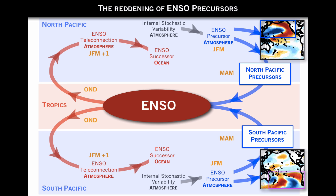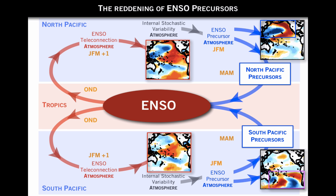Now the interesting part is we can take these precursor indices, both north and south, and make a correlation map with the SST of the following winter. What's interesting is that you start from patterns that are not symmetric with respect to the equator, but then through this loop process ENSO symmetrizes them, and you get an ENSO-like pattern for both precursors as they progress through the loop. So for example, this precursor in the south — during this loop, the variance in the southern hemisphere gets projected back also into the northern hemisphere. You have transfers of variance between hemispheres. This reddening is the mechanism to actually create low-frequency variance in the basin.